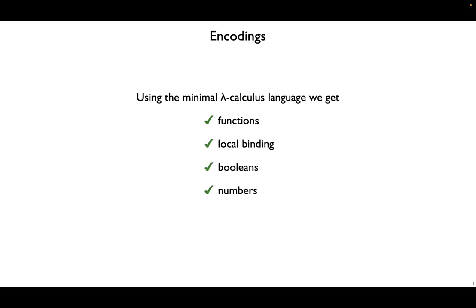Starting off with the tiny lambda calculus, which only has functions, so far we've managed to encode local binding, Booleans, and numbers.